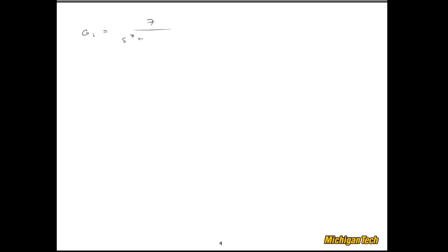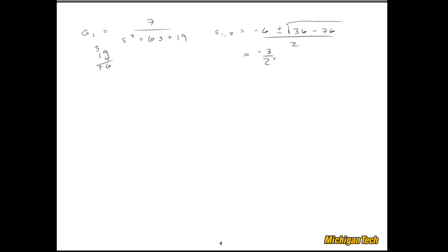Now let's do a couple of examples. Say we have some transfer function and we'd like to classify it. We find the roots: negative 6 plus or minus √(36 − 4·19) all over 2, which is negative 6 plus or minus √(36 − 76) over 2. We look at this and see a negative real part, so it's not unstable. Plus or minus √(−40)/2 gives us plus or minus √10 · j. So we have complex poles.